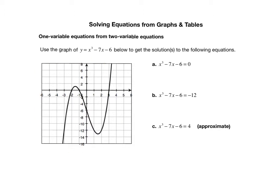This is to see if you can see the relationship between this two-variable input-output rule and this corresponding one-variable equation. So we're going to do this with graphs and also with tables. Here is the graph of y equals x cubed minus 7x minus 6. Again, it's not a linear relationship — a linear relationship forms a straight line, and this certainly is not a straight line curve. However, there's a connection between this two-variable input-output rule and these one-variable equations. I'm going to rewrite this as: x cubed minus 7x minus 6 equals y.